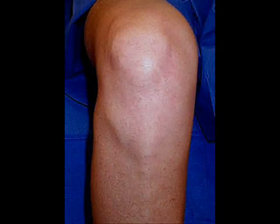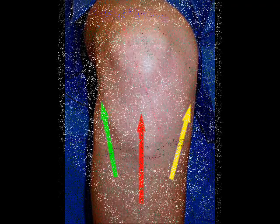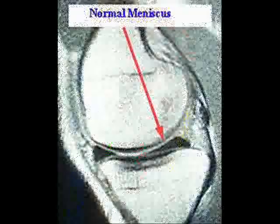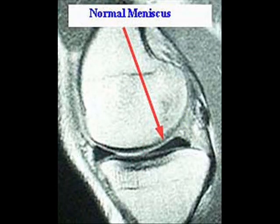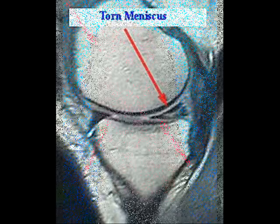If you end up with a meniscus tear you end up having pain on the inside or outside part of your knee as represented by the green or yellow arrows. A physician may order an MRI — this is a normal MRI and this is a torn MRI, and the gray signal within the black is the torn meniscus.